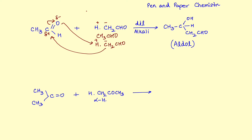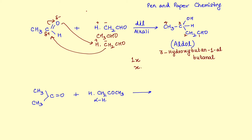The aldehyde gets priority in naming. Counting the carbon chain: one, two, three, four. This compound would be called 3-hydroxybutanal — the word root is 'bute,' it is saturated, and there is a hydroxy group at position 3 and an aldehyde at position 1. You can write it as butanal or butan-1-al. Position number 1 is not always explicitly written, similar to how you write 'x' rather than '1x'.